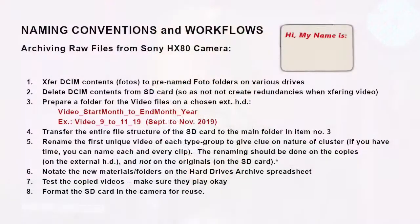Then I would take the entire contents of the file structure from the SD card and drag it into that named folder. So all those folders — DCIM, stream, BDMV — will be in that folder and I can find them. Naming that folder wisely will make it easier to find later on down the road. If you don't have time to rename every single clip, you can go down to the lowest level where you see all the clips with their unique camera numbers, and begin renaming those clips. You may have a zillion clips there — it could take quite a long time.